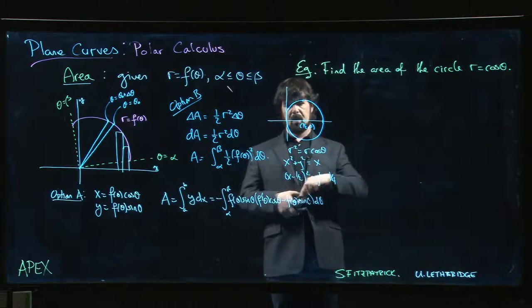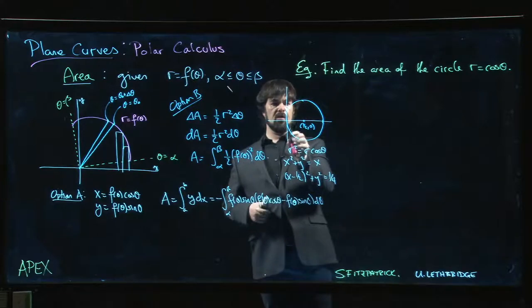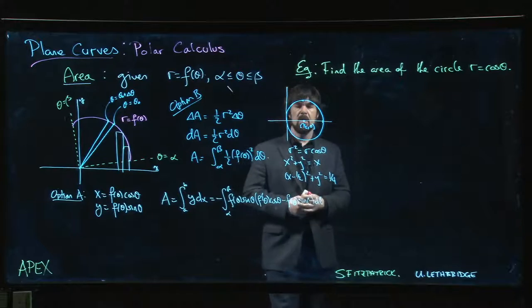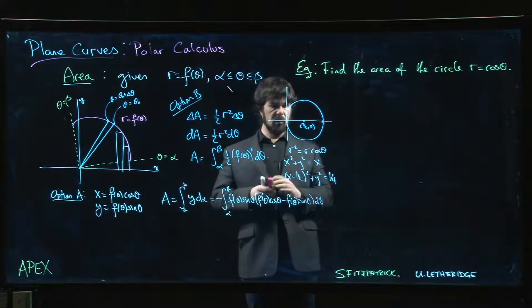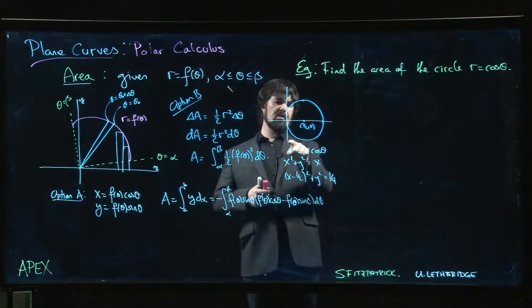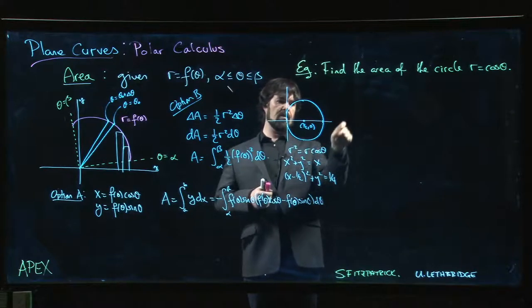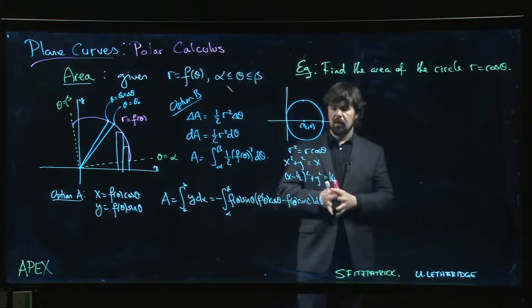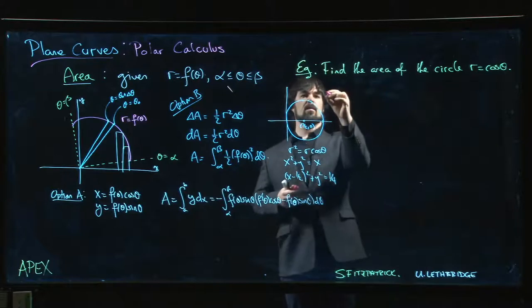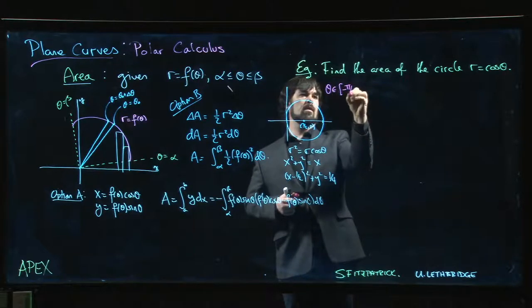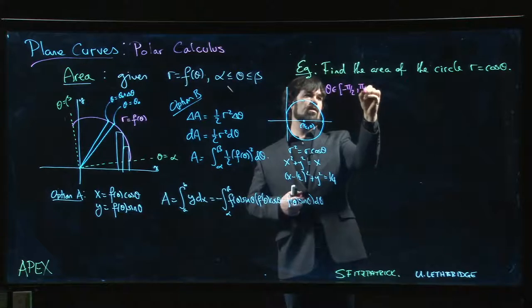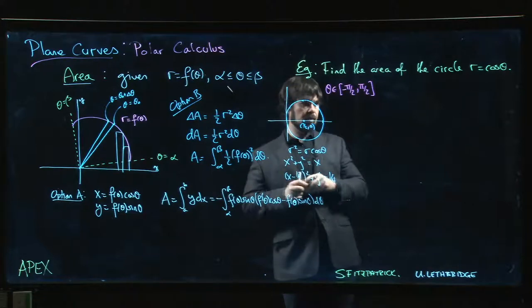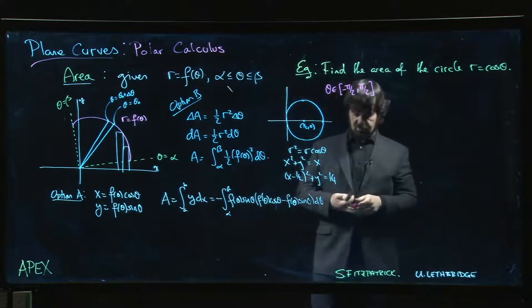Also, notice that because we are only in quadrants 1 and 4 here, what are the possible angles for theta? The easiest way to do this is to go from minus pi over 2 around to plus pi over 2. That's the best way to do this one. So theta goes from minus pi over 2 to pi over 2. We don't have any part of the circle over in the second or the third quadrants.